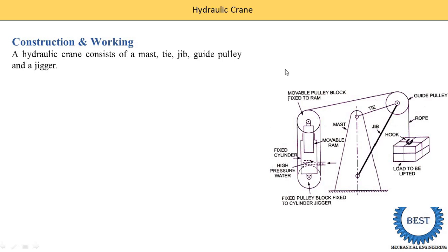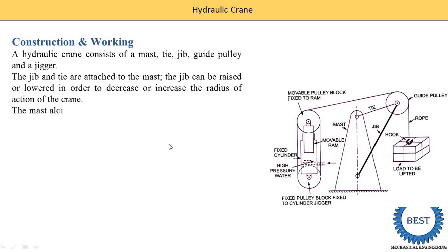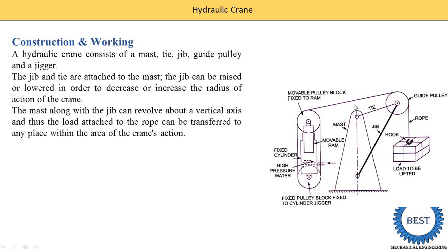Due to this tie and jib, the whole crane lifts the weight in the upward direction or the downward direction. This component is known as the guide wheel, and this part is known as the jackyard. This mechanism is the same as that used in a hydraulic lift. The jib and tie are attached to the mast, and this jib can be raised or lowered in order to increase or decrease the radius of action of the crane. The mast along with the jib can revolve about the vertical axis, and the load attached to the rope can be transferred to any place within the area of crane action.